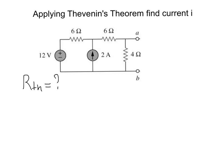To find R Thevenin, we need to remove all independent power sources and find the equivalent resistance in the circuit. In our case, there are two independent power sources: 12 volts and 2 amps. Once we turn off the independent power sources, we create a new circuit. When we remove a voltage source, we create a short circuit. So we have a 6 ohm resistor.